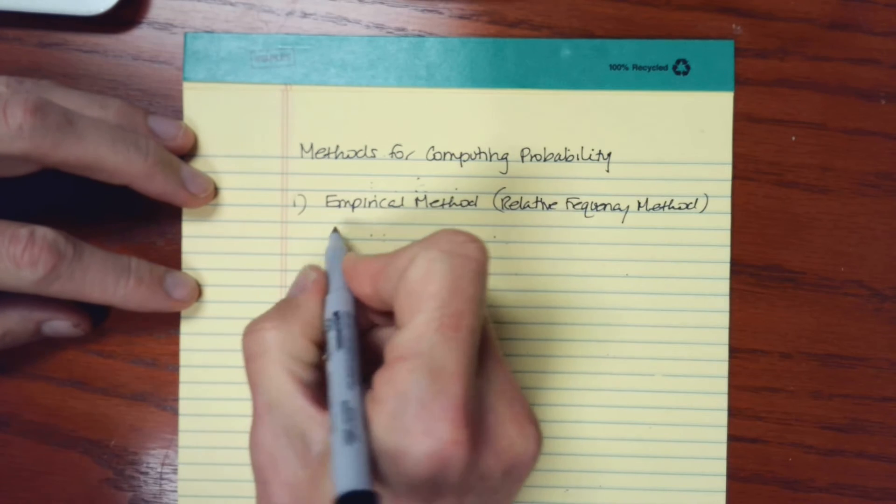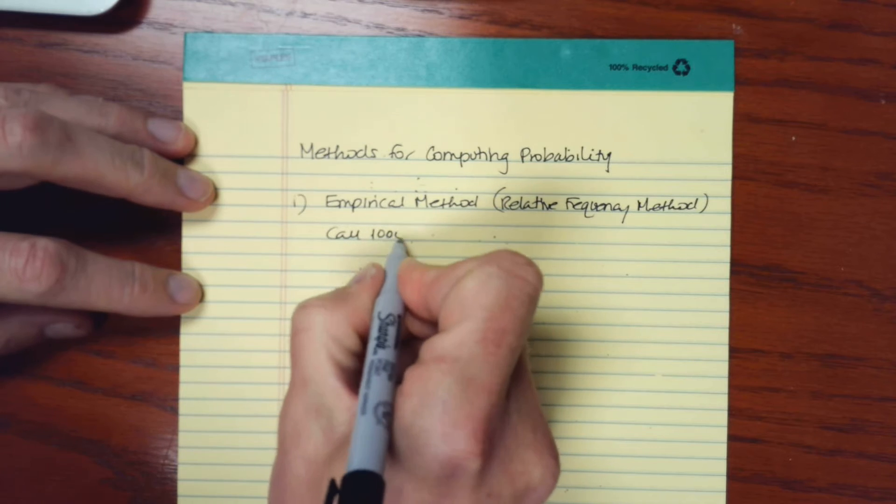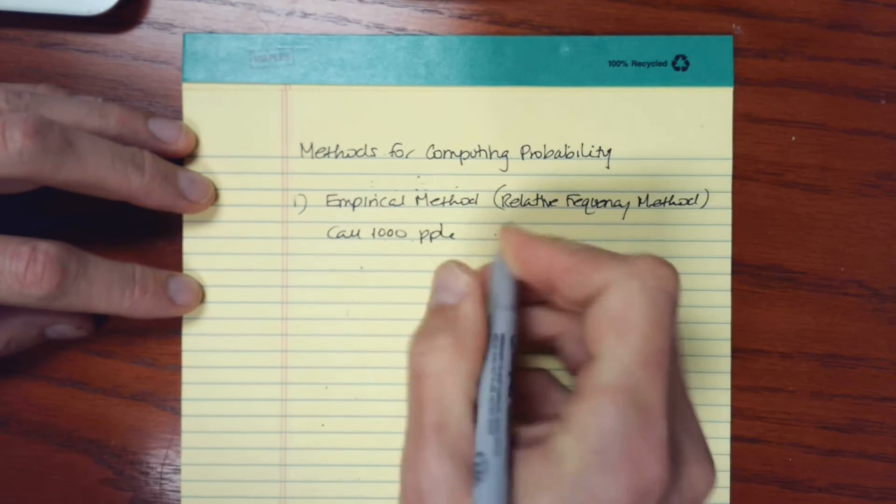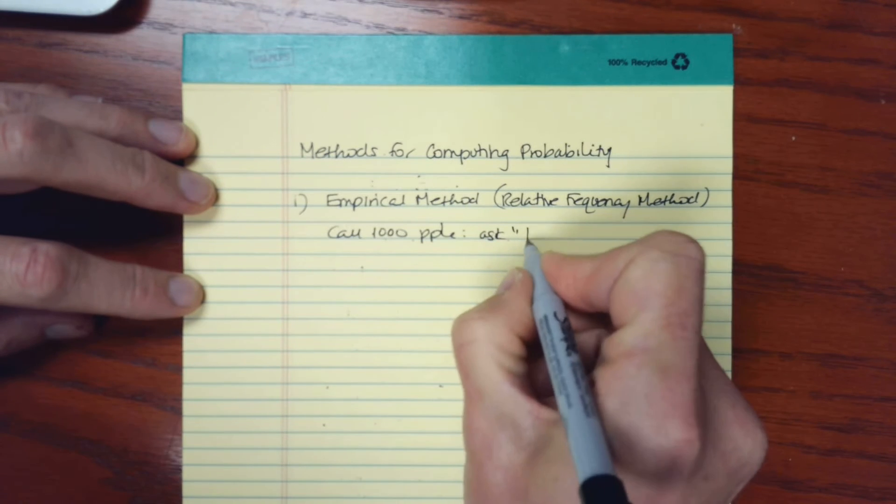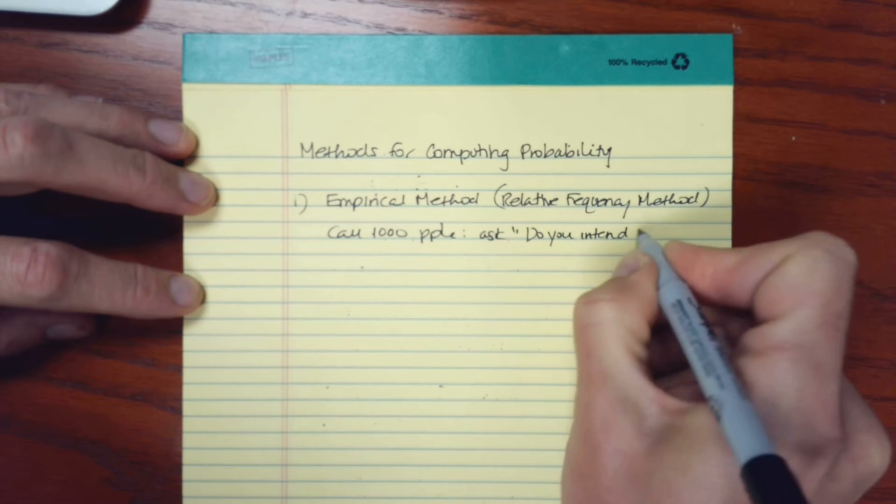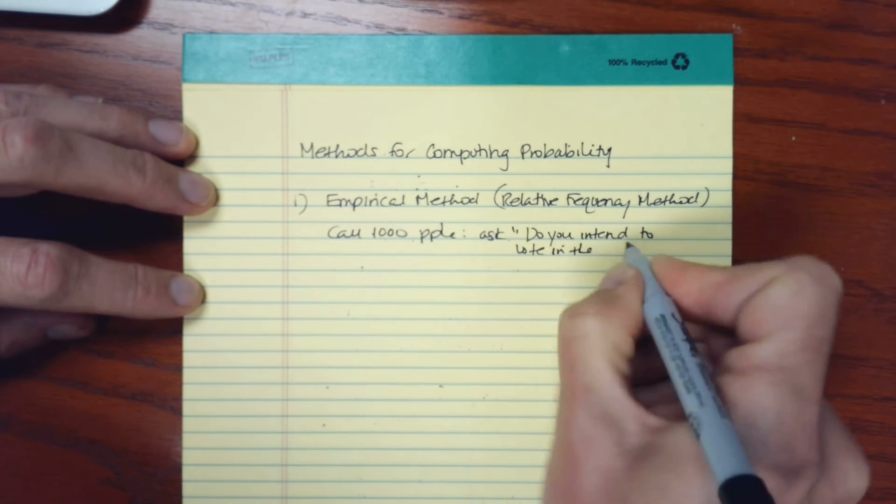So for example, let's say that we are going to call a thousand people and ask, do you intend to vote in the next election?